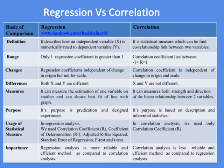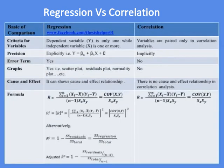In regression, the criteria for variables regarding the dependent variable is one, and independent variables can be one or more. While in correlation analysis, the criteria for variables are that they must be paired.